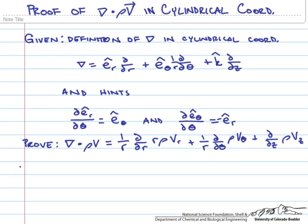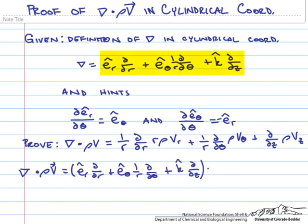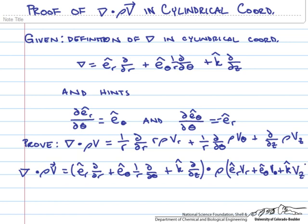The first thing we should do is substitute what we know for the gradient dot rho times the velocity vector. We know the gradient, which is just equal to what is given above, dotted with rho times the velocity vector. The velocity vector is the velocity in each direction times the unit vector in that direction: the radial unit vector times the radial velocity, plus the theta unit vector times the theta velocity, plus the z unit vector times the z velocity. So let's go through and FOIL this equation.